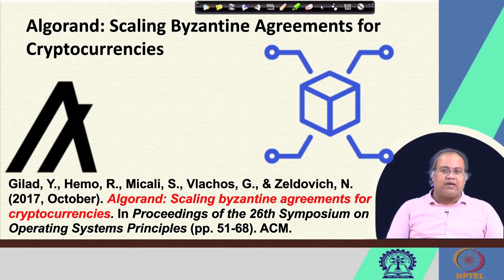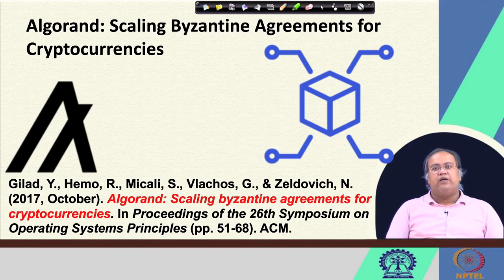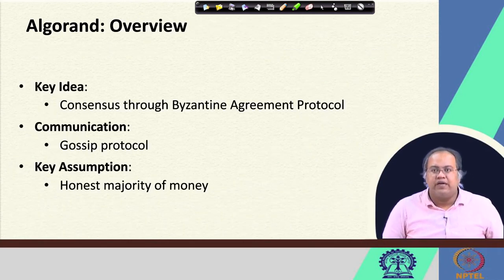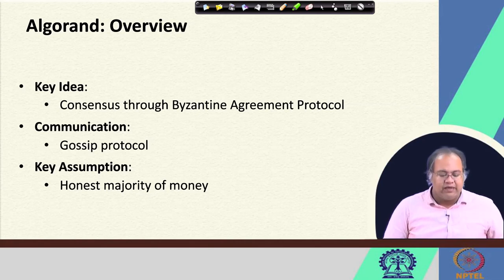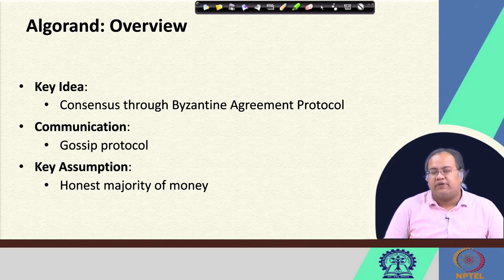It would be nice for us to learn what magic Algorand does to scale up in terms of both the number of nodes supported as well as the transaction throughput supported by the underlying blockchain. The key idea of Algorand is that it achieves consensus through the Byzantine agreement protocol. Once it achieves consensus through Byzantine agreement, transaction scalability is not going to be a problem — it scales up well with the workload of the system.